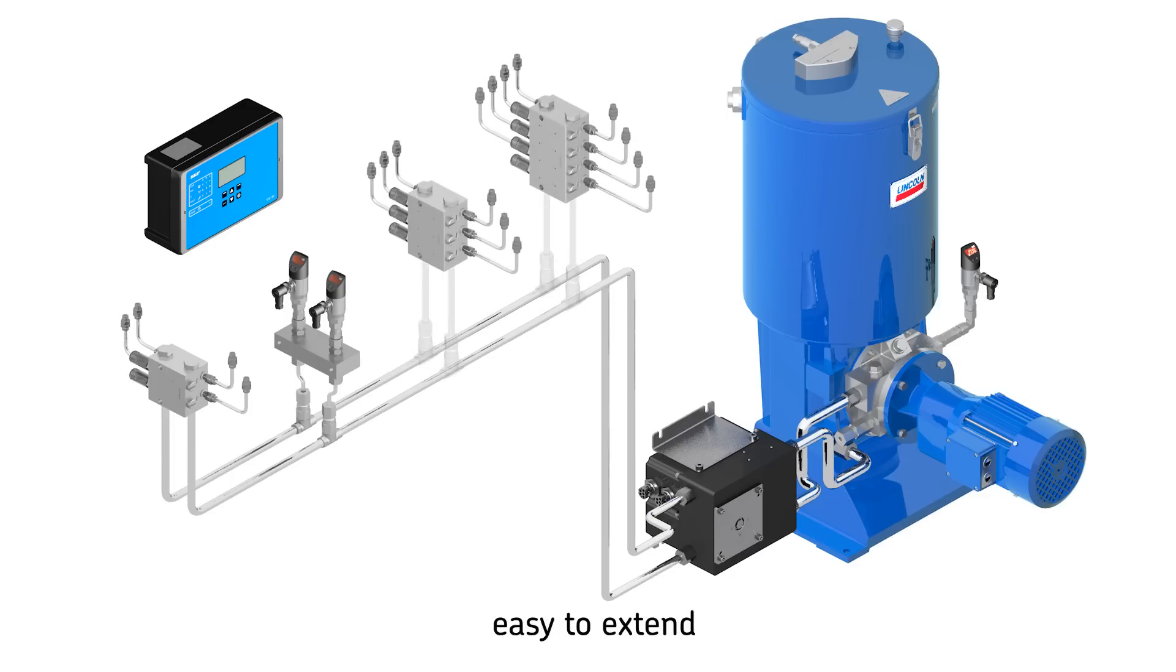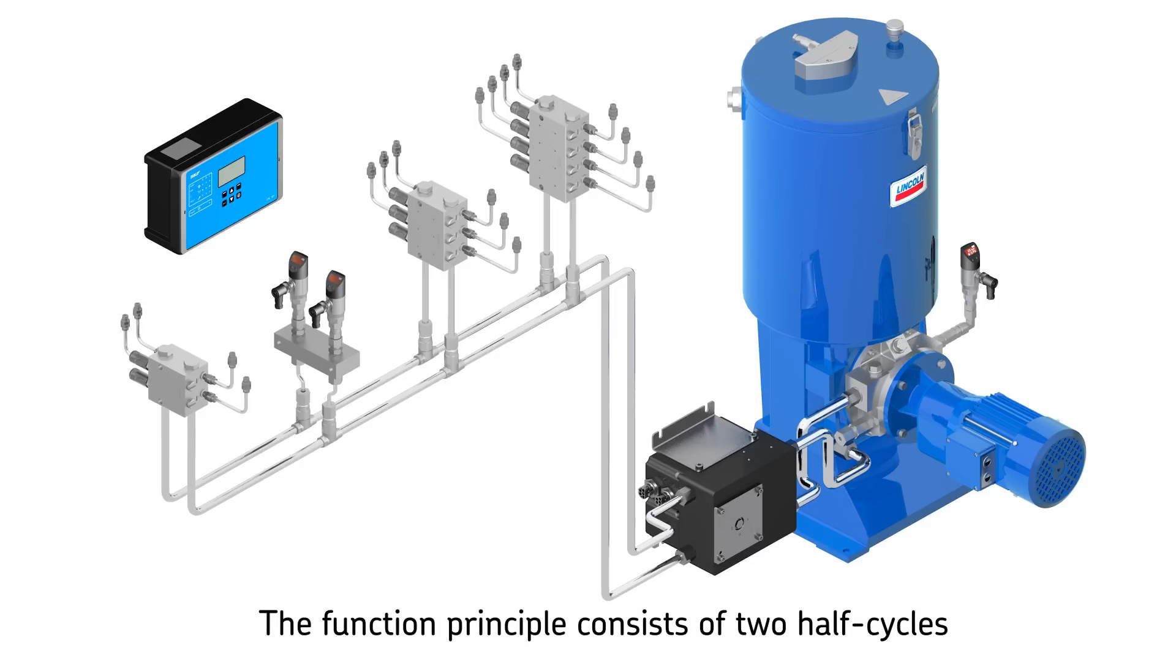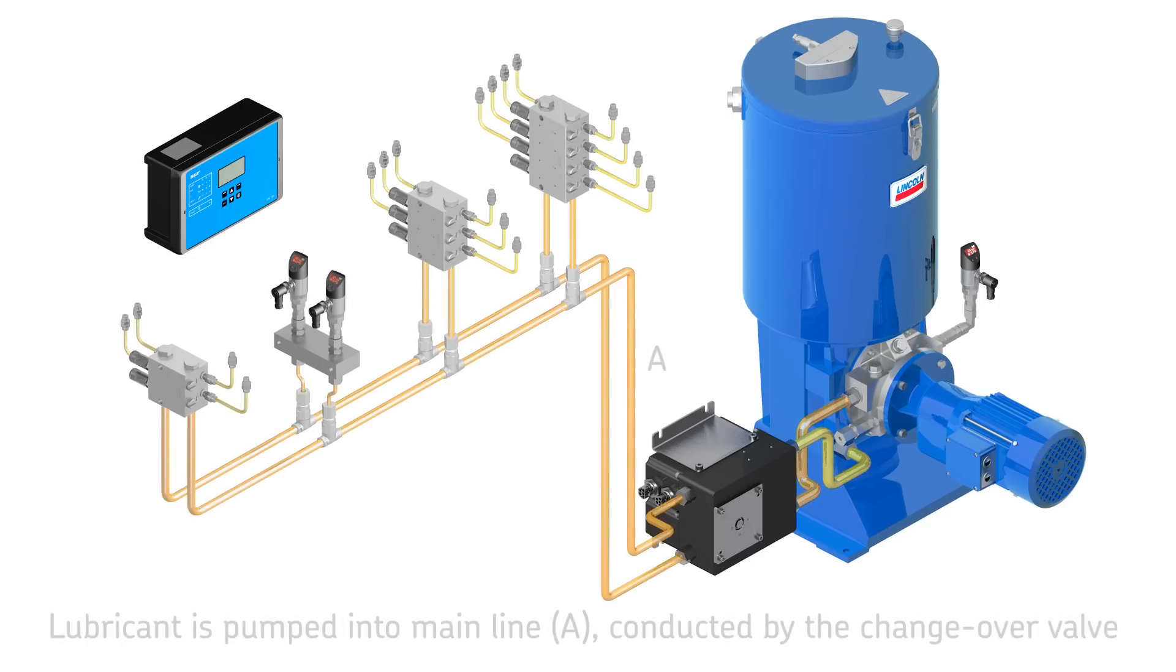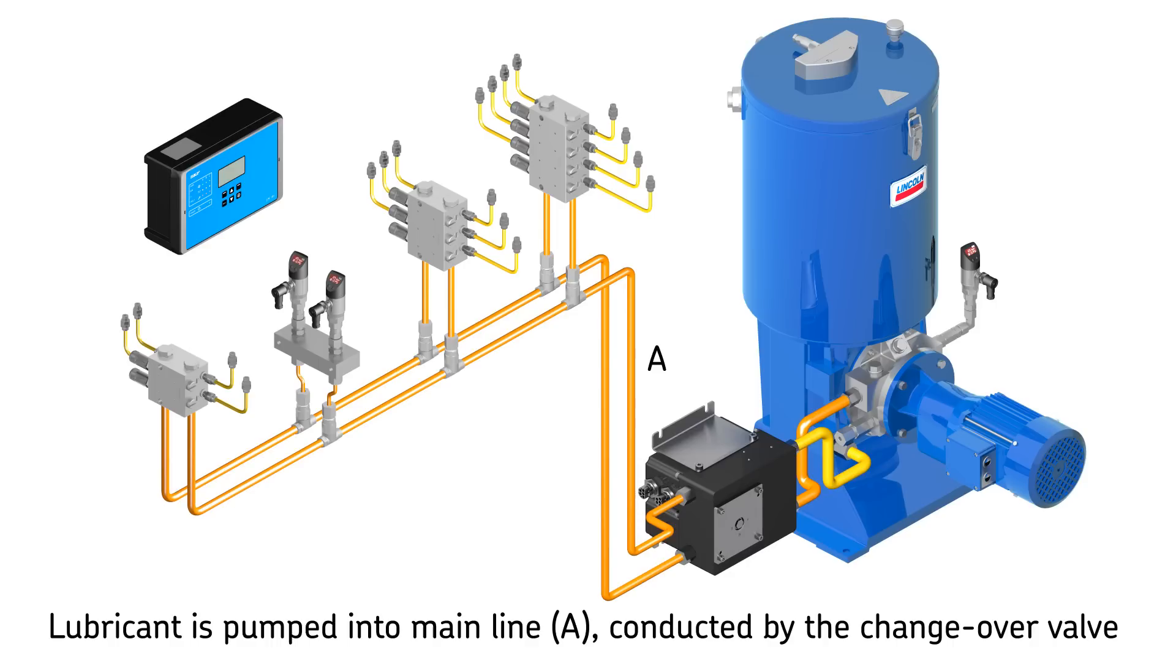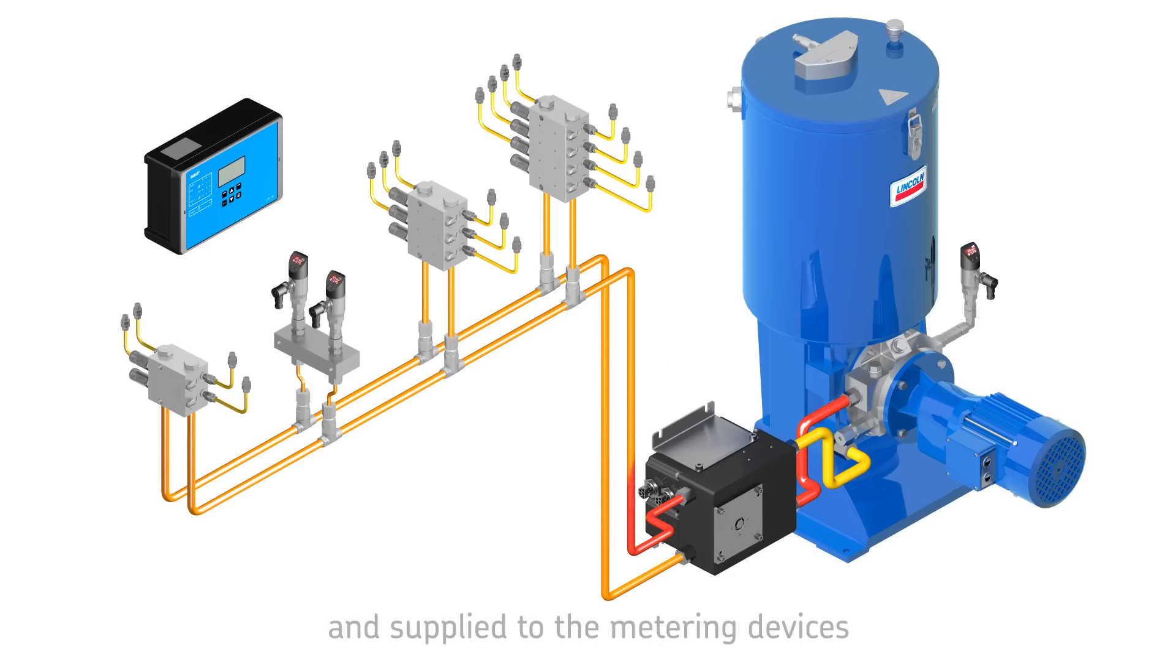The function principle of the dual-line system consists of two half cycles. In the first half cycle, the lubricant is pumped into mainline A. The second mainline B is connected to the relief line.